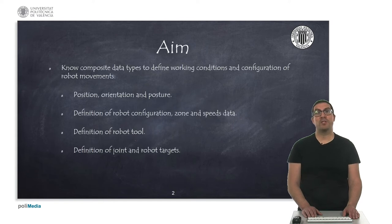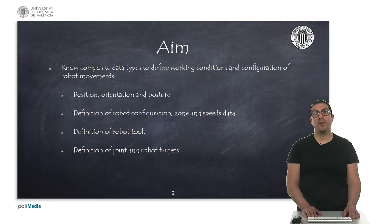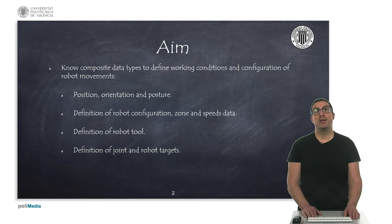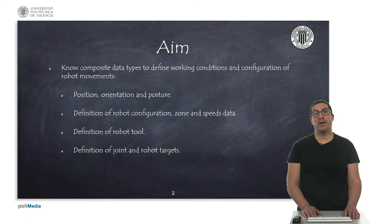Therefore, the aim of this presentation is to introduce the main composite data types used in RAPID that allow defining working conditions and configurations for robot movement instructions. Specifically, I would like to show data that allow you to define a position, an orientation, and a posture, as well as different robot configurations and speed data configurations. We will also see how to define the robot tool and how to define joint and robot targets in the end.